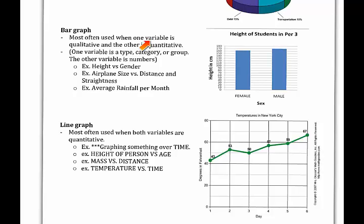Remember, qualitative is going to be like words - like male versus female. Then the quantitative are going to be usually numbers or measurements. Some examples of this would be height versus gender, airplane size versus distance and straightness for paper airplanes, and average rainfall per month would be examples that you could use as a bar graph.